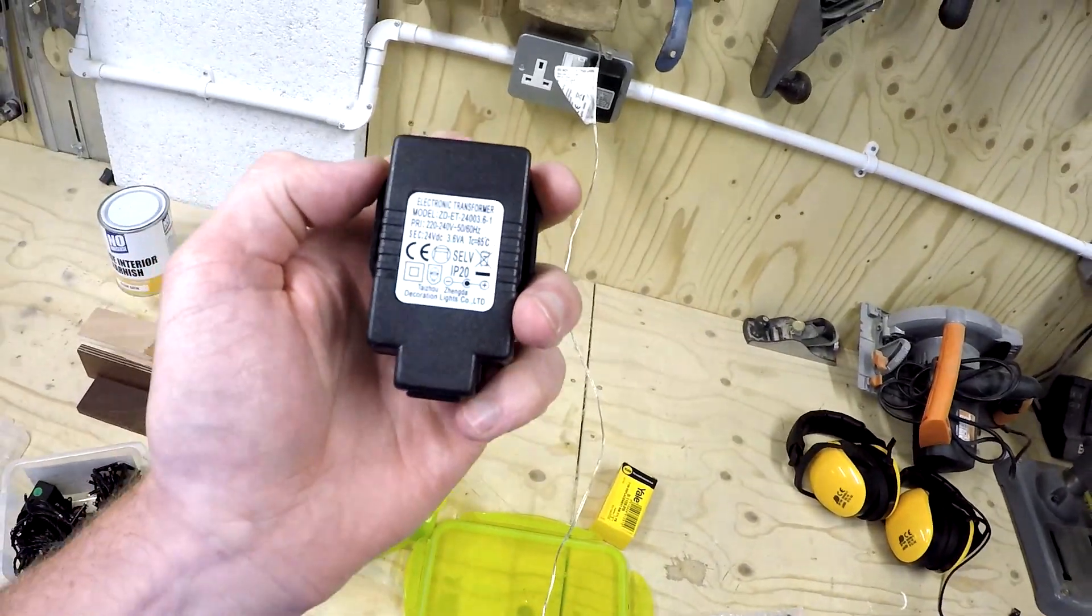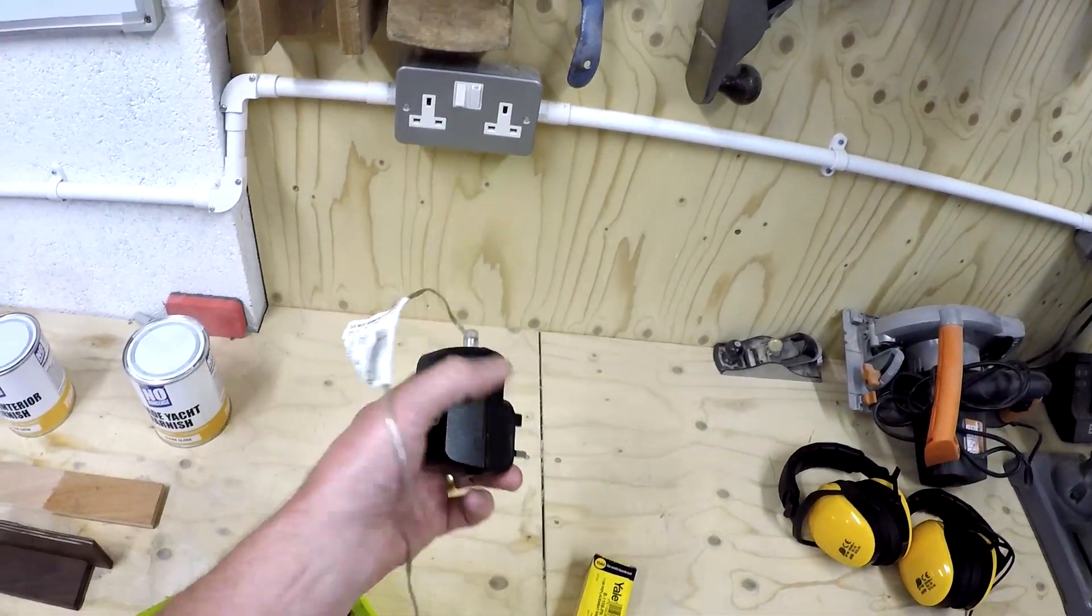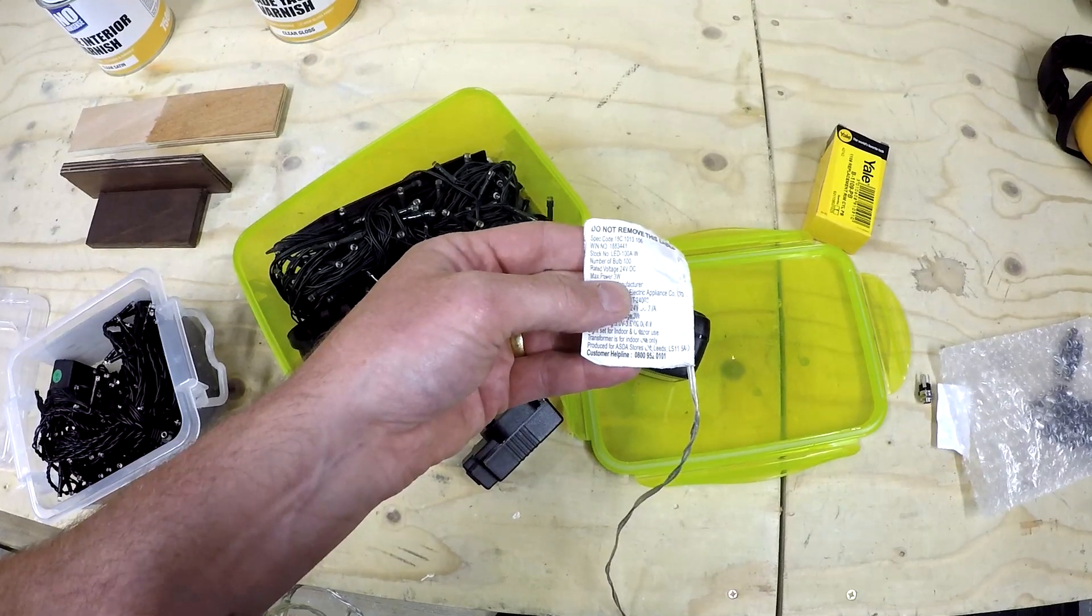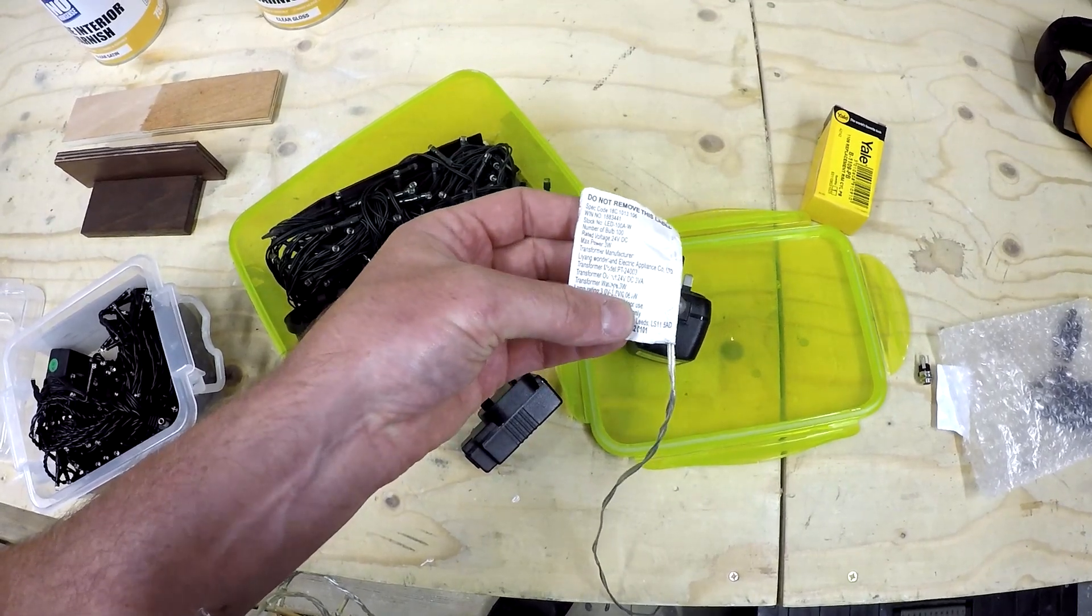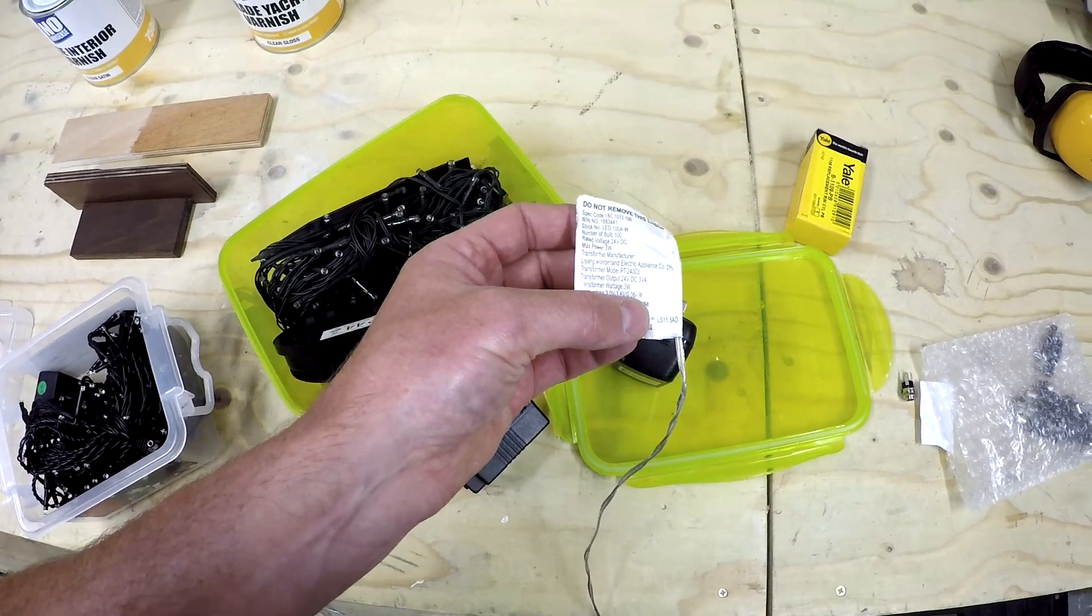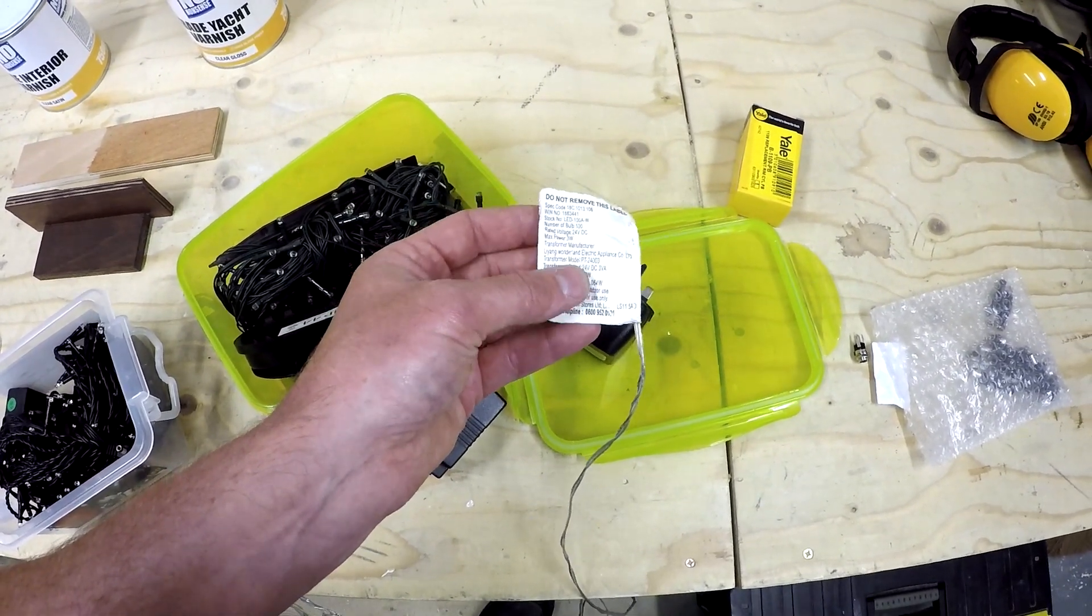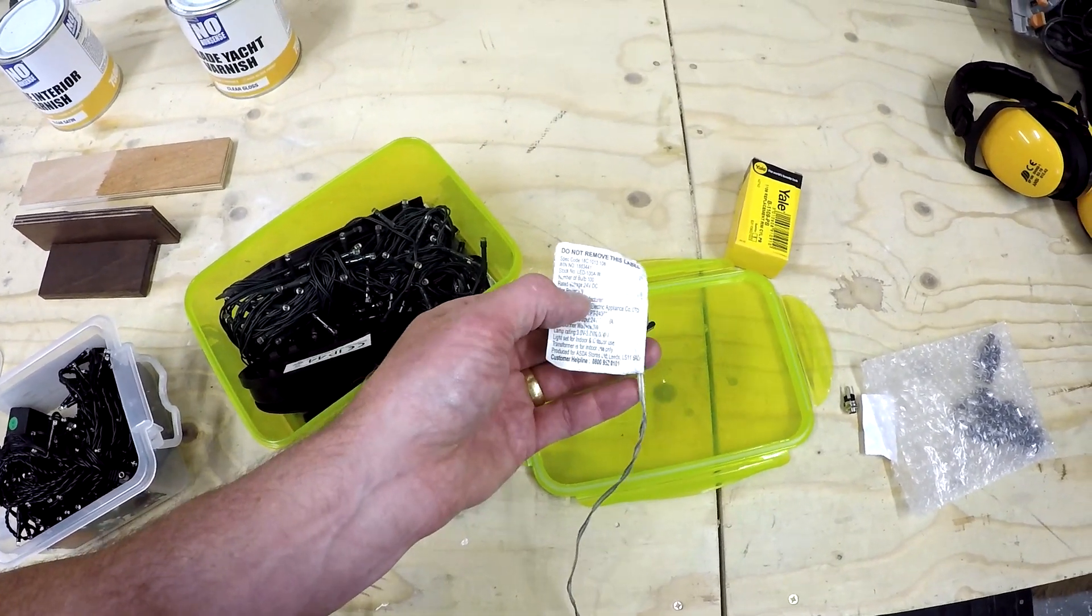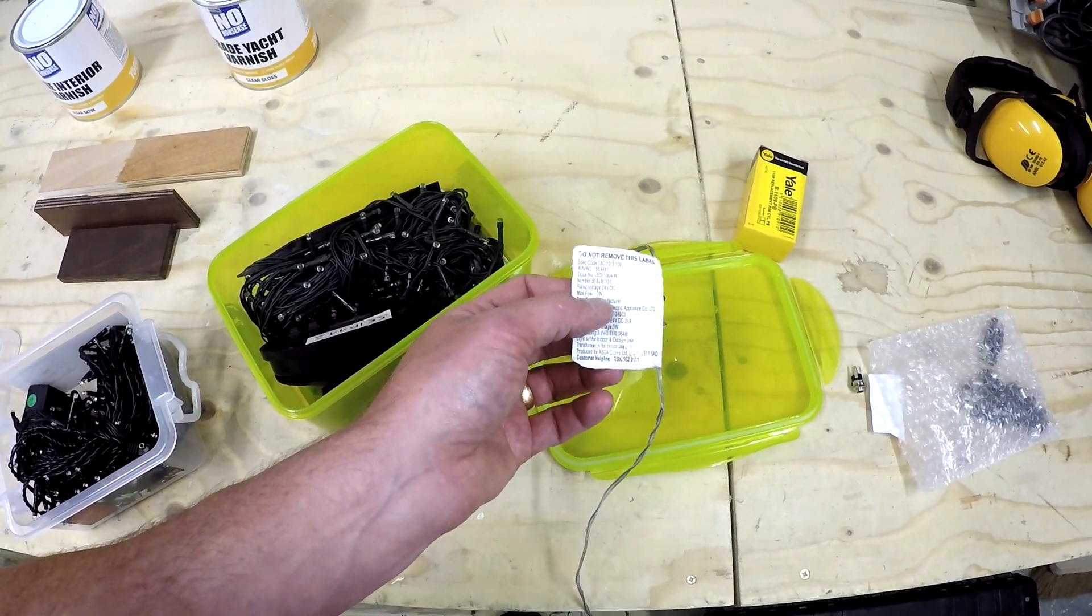The transformer on this one says 24 volts. The other ones that I plugged in says 24 volts, 3V8. It says max power 3 watts, 100 bulbs. Lamp rating is 3 volts to 3.6 volts, rating of 0.064 watts per bulb. So over a hundred bulbs, that would make it 6.4 watts. Someone can probably explain why that adds up to 6.4 and it says 3 watts there.